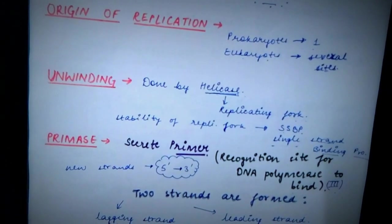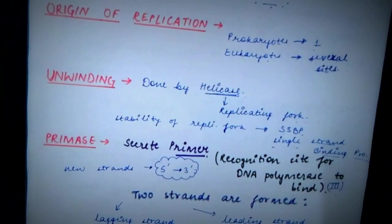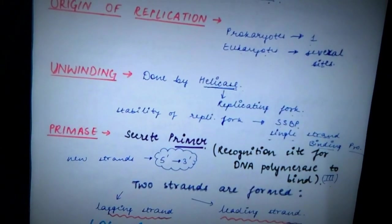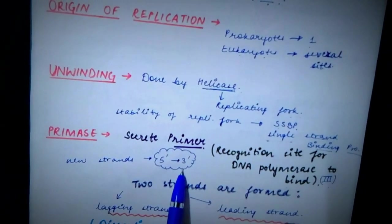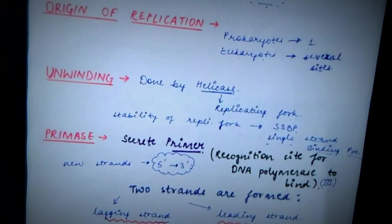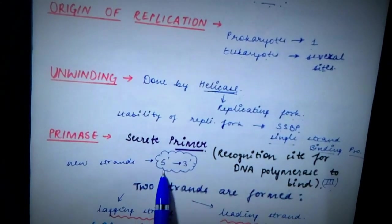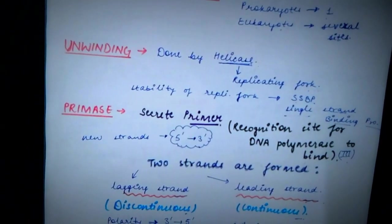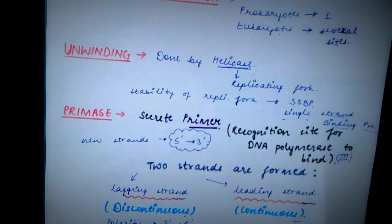So one more thing that you have to remember is that DNA polymerase 3 adds new nucleotide always in the direction 5' to 3' end. So the new nucleotides or the new strands are formed always in the direction 5' to 3'. This was really an important point to remember.